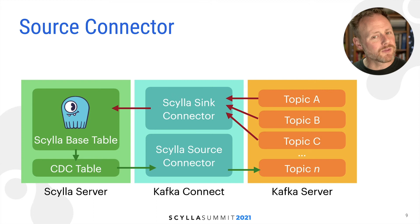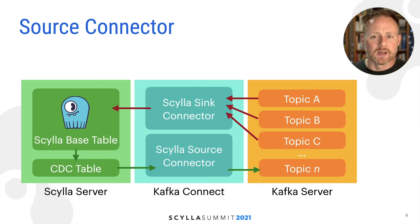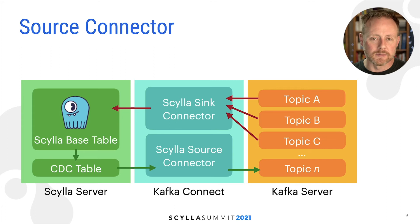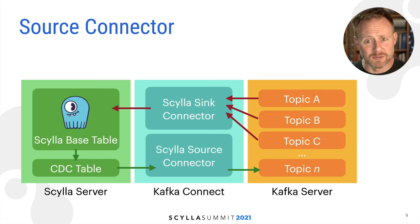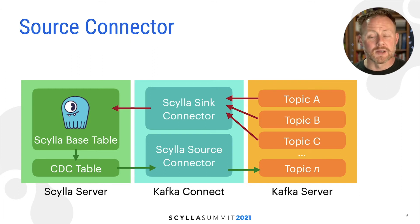Of course you might want to go the other way — you've got data in a topic and you want that to get into a table in Scylla, so people can query it in whatever way the table is designed to be queried. Since topics are notoriously not queryable, that's a sink connector where you read new events from that topic and then insert them as new rows in that table. So you've got source and sink — both of those are things you can do in Connect.